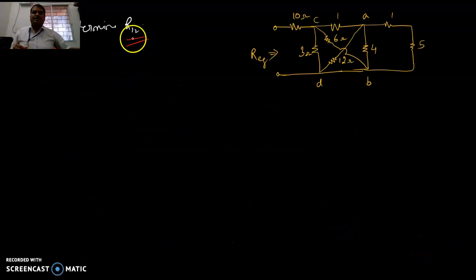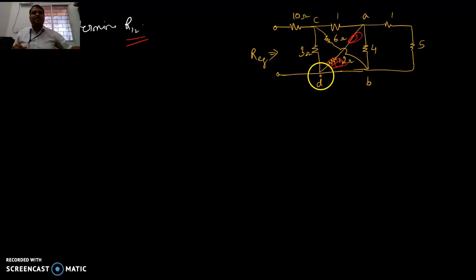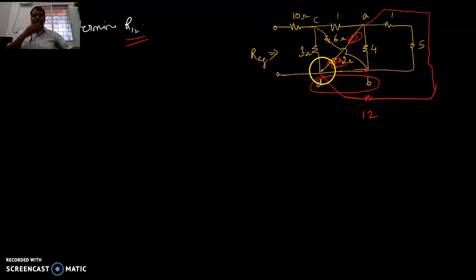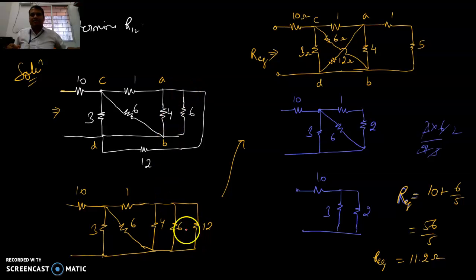Another circuit: find R12, the equivalent resistance. This looks a bit complicated but can be simplified. Suppose this 12 ohm was connected differently — if D and B were merged, things would look much easier. Let us see: if D and B are merged and C and A remain as is, we take this 12 ohm slightly out of the way.